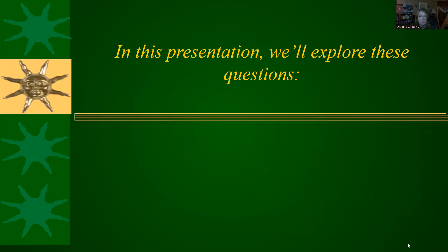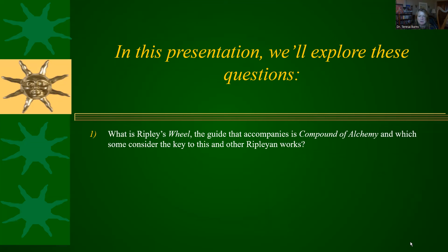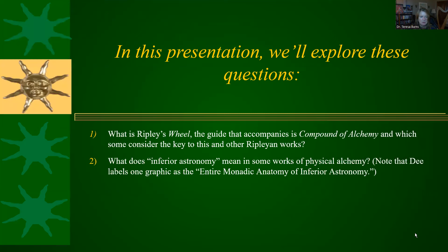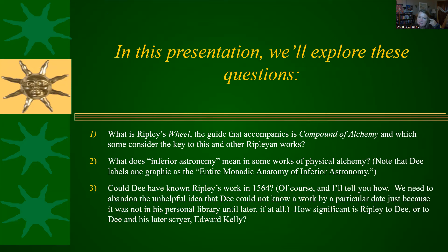These are the questions we're going to explore in this advanced class. First, what is Ripley's Wheel? Why do some people consider it a guide to this and other works of Ripley's? The main person who does, by the way, is Jennifer Rampling, and I totally agree with her analysis. What does inferior astronomy mean in physical alchemy? And could Dee have known Ripley's work in 1564? Of course he could, and I'll tell you how right now.